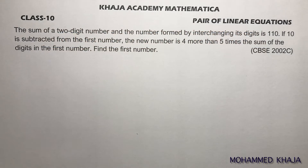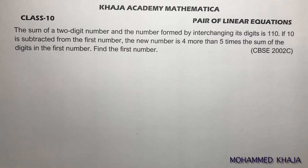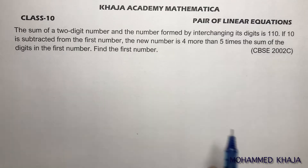The sum of a two-digit number and the number formed by interchanging its digits is 110. If 10 is subtracted from the first number, the new number is four more than five times the sum of the digits.